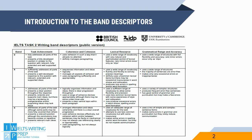The band descriptors are basically an explanation of what you need to do to get the band mark you want. There are four descriptors: task achievement, coherence and cohesion, lexical resource, and grammatical range and accuracy.